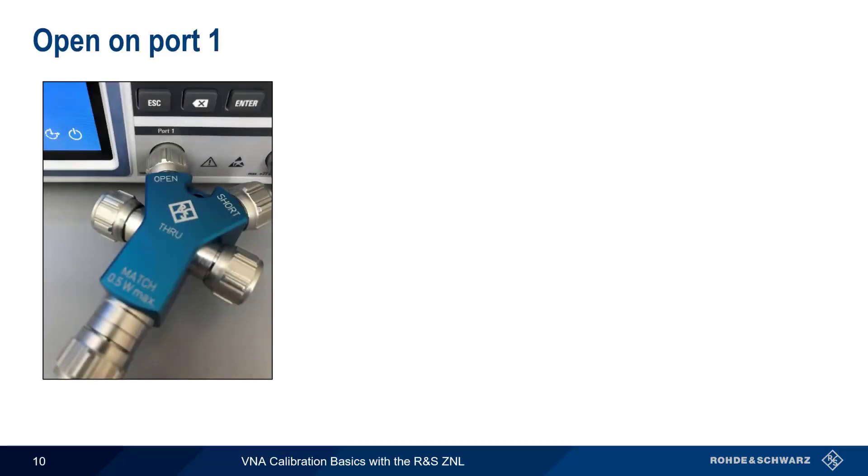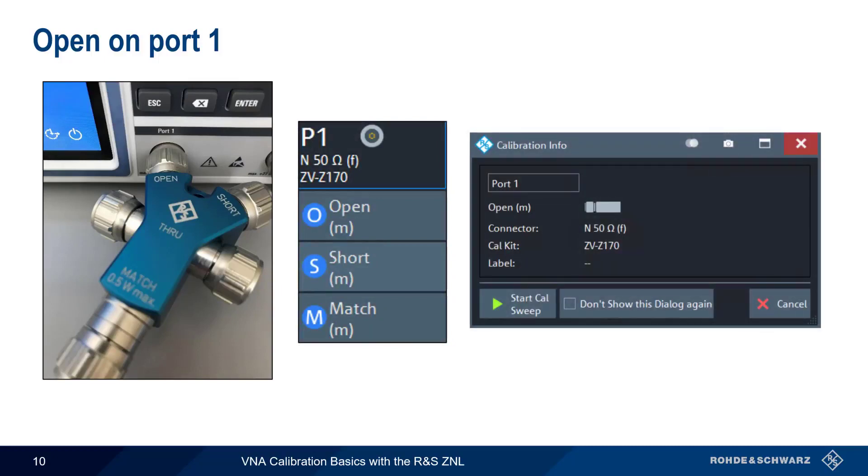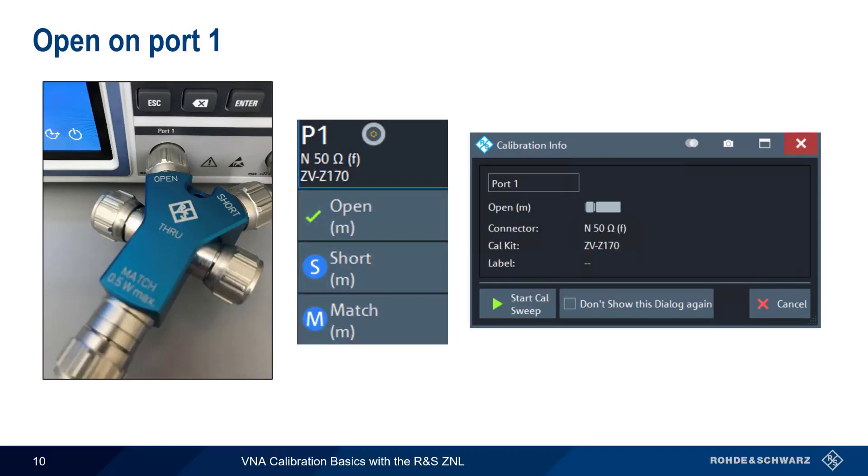Since we're starting with our open on port 1, we connect the open connector on our calibration kit to port 1, then click on Open. A dialog box will appear, and we start the sweep by clicking Start Cal Sweep. After about a second, a green check box should appear next to Open.